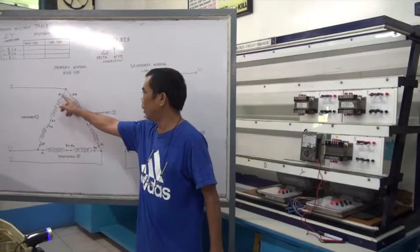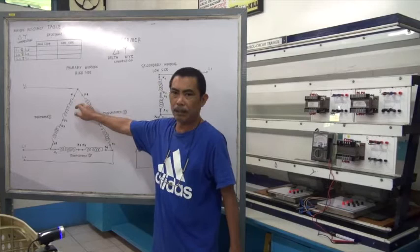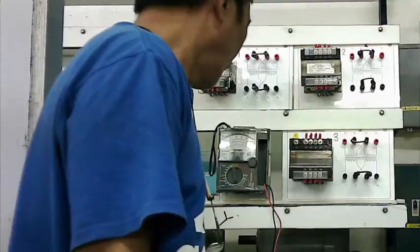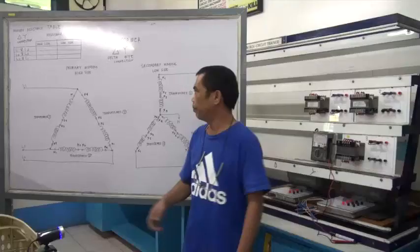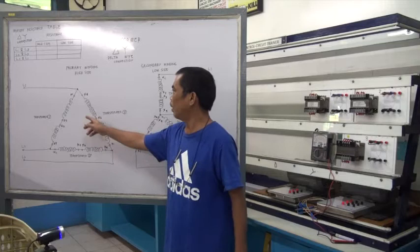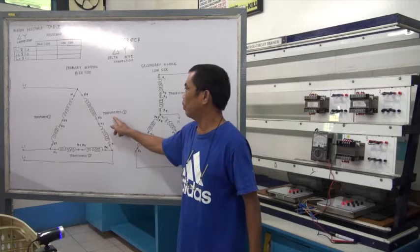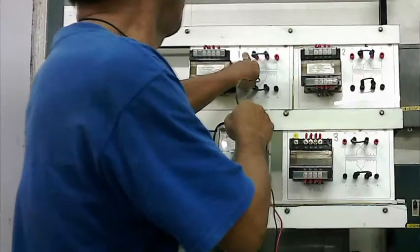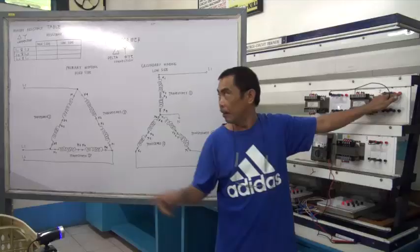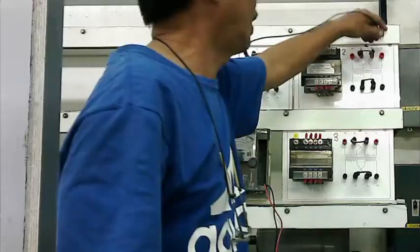First, we connect the primary winding in delta. Now we follow this diagram. As you have seen in our diagram, we connect the terminal of transformer one and the terminal of transformer two — H1 of transformer one and H4 of transformer two. This is our terminal H1 of transformer one and H4 of transformer number two.